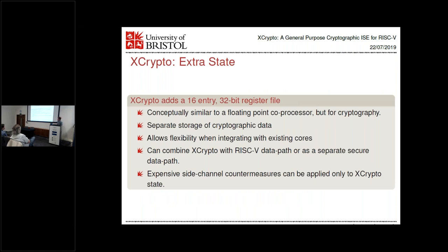In terms of what we actually add: we do add some extra state — an extra register file to store all your secret data. The idea is that it's like a floating point coprocessor. RISC-V already adds an extra register file for floating point computations, and we thought we'd separate the concerns for cryptography as well. It also means that if you have expensive side channel countermeasures for power consumption — making all your data operations consume a constant amount of power, which often requires a different logic style like something more exotic than standard CMOS — these things tend to be expensive in terms of area. So the less of your data path and state you have to implement those on, the easier it gets. A lot of this is about enablement: how do you enable people to implement really secure systems, even if you're not specifying that they absolutely have to?